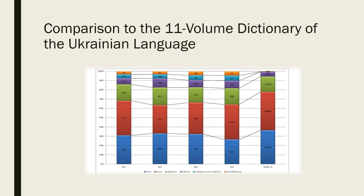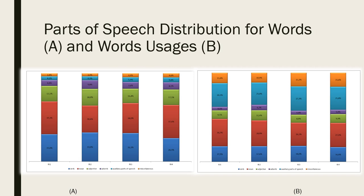The results were compared to the quantitative parts of speech distribution of the dictionary of the Ukrainian language consisting of 11 volumes and presented on the slide. The parts of speech distribution was done for words and the results are presented on the slide.